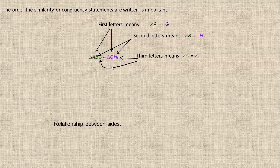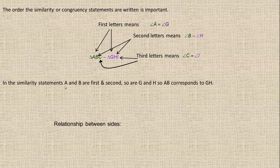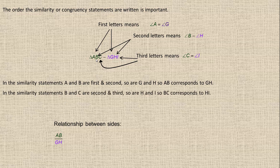Now the relationship between the sides: AB are the first and second letters in the first triangle, and GH are the first and second letters in the second. So AB corresponds to GH. The B and C are the second and third letters, and so are H and I, so BC corresponds to HI.